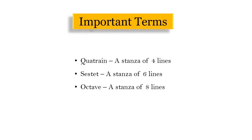Now first of all you need to know some important terms: quatrain, sestet, and octave. Quatrain means 4 lines, sestet means 6 lines, and octave means 8 lines.